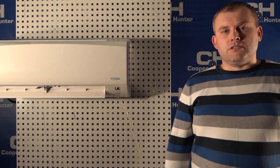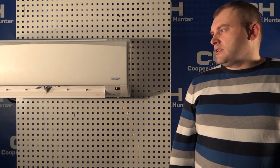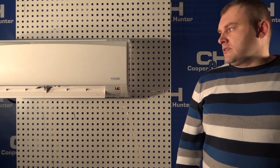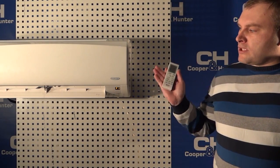To eliminate errors of the temperature sensors of the air conditioner Cooper & Hunter we need to completely de-energize the air conditioner. To check the sensor of the indoor unit it is necessary to disassemble the case of the indoor unit.